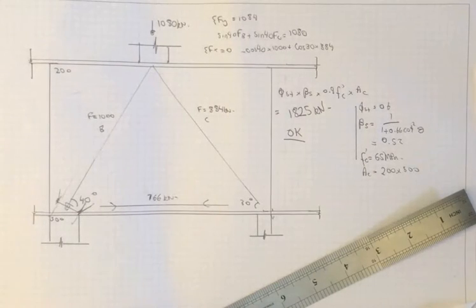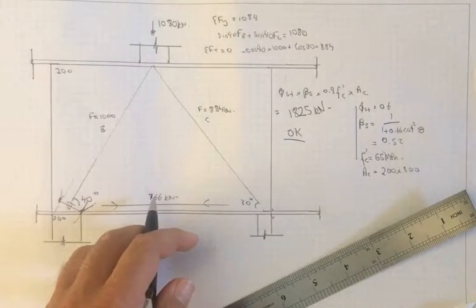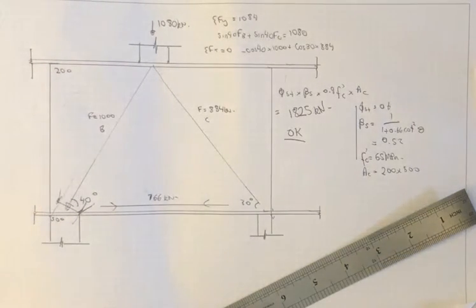Back to the example we had earlier. Here we're going to cover section 7.3 ties. Earlier we had a tie force of 766 kilonewtons.